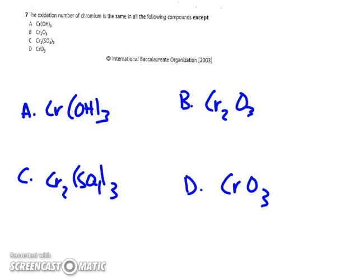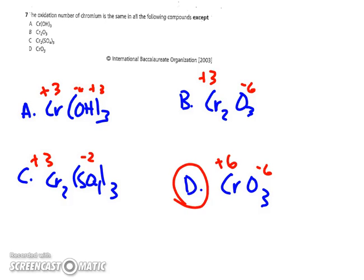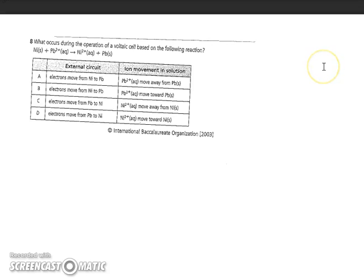Number seven asks which compound has a different oxidation number for chromium. In the first compound, minus six from three oxygens and plus three from three hydrogens means chromium is plus three. In the second compound, two chromium atoms each balance the minus six from oxygen, so each is plus three. With SO₄ having a minus two charge, three of them gives minus six, and again two chromium atoms each equal plus three. But in CrO₃, the total minus six on oxygen means chromium is plus six, so D is the one where chromium's oxidation number changes.